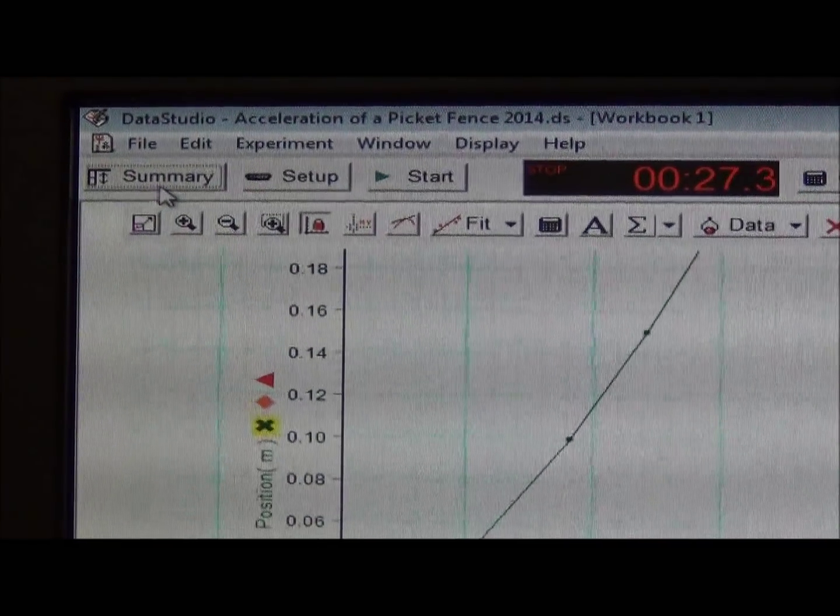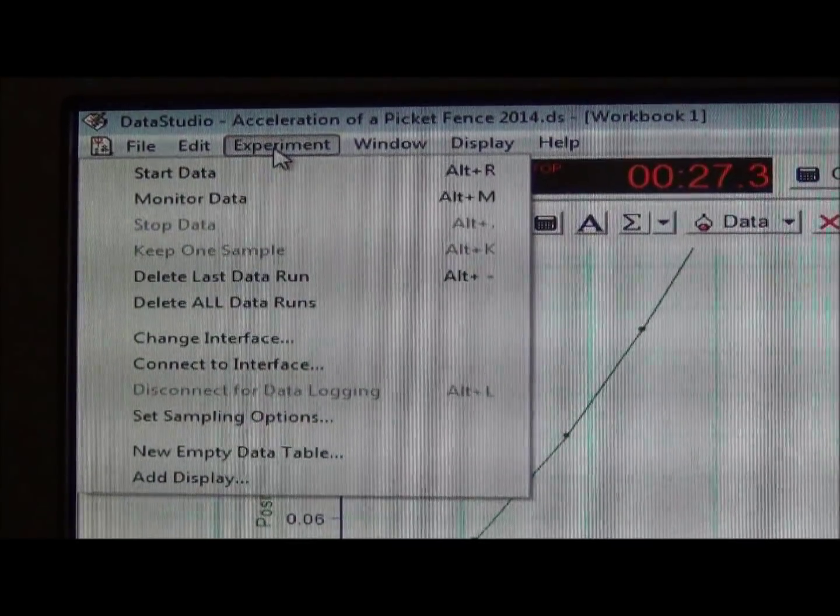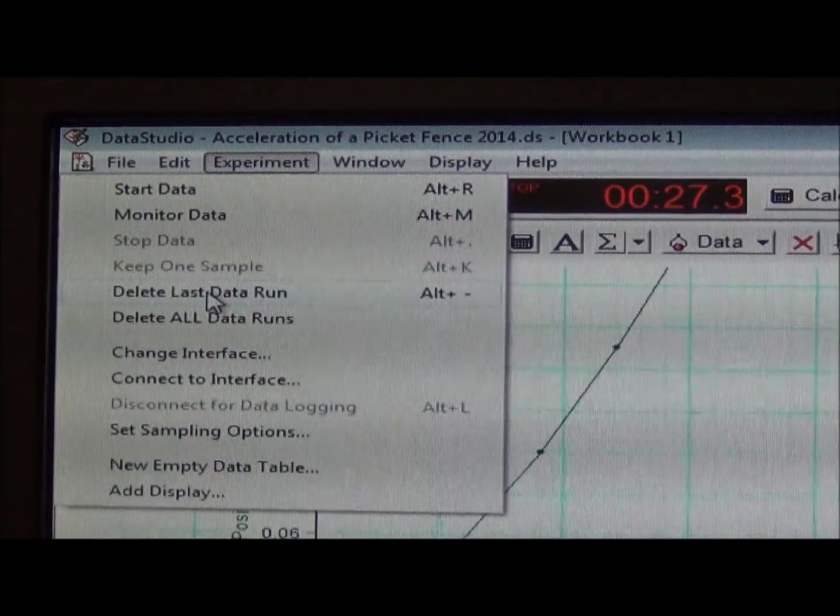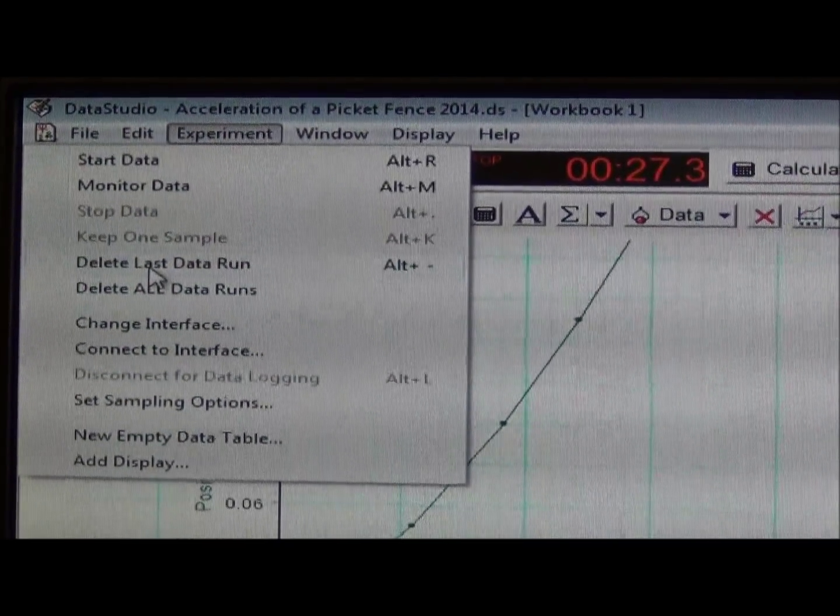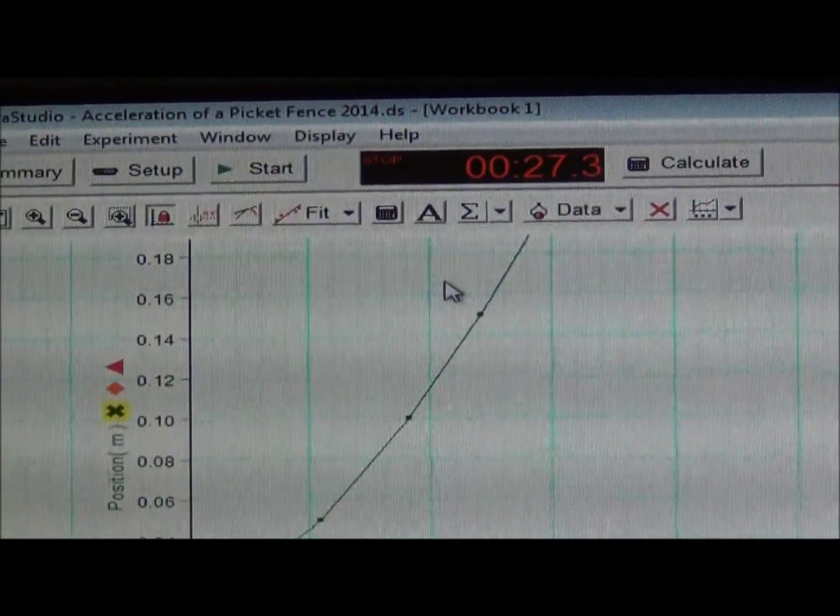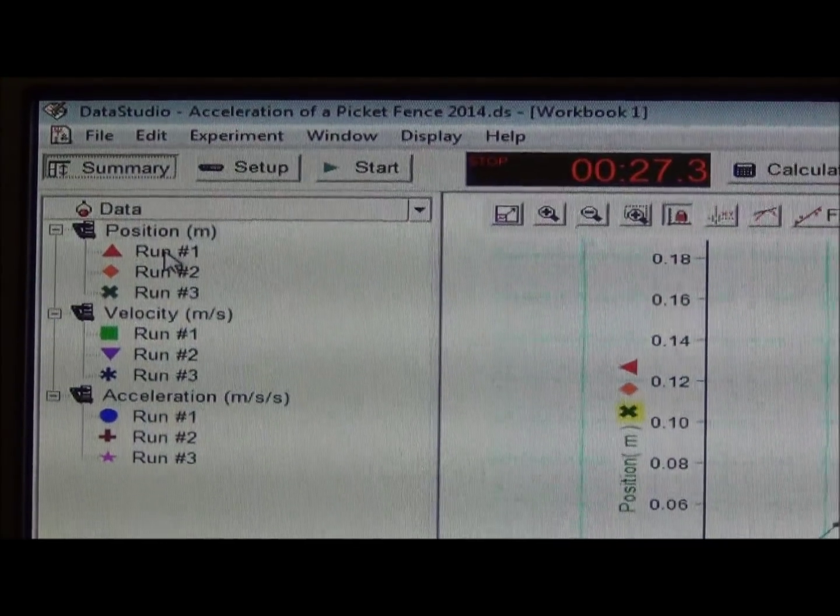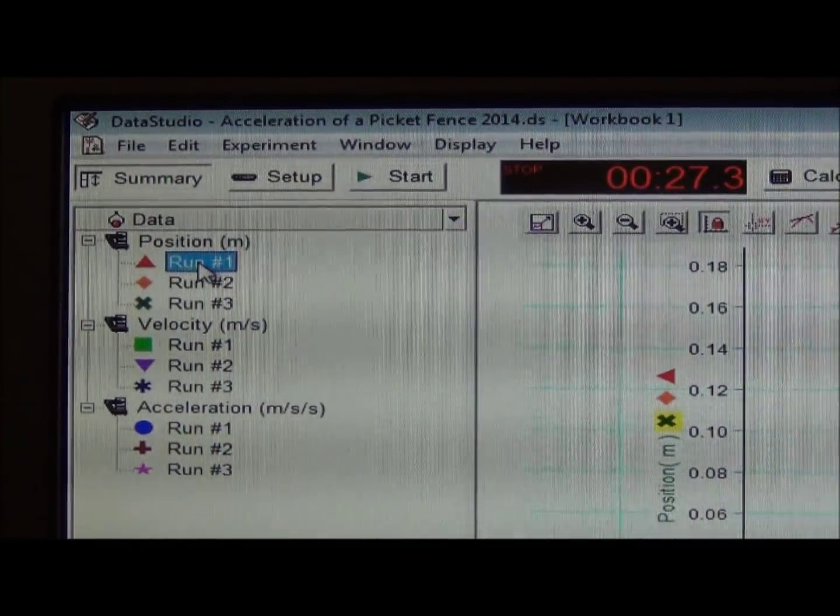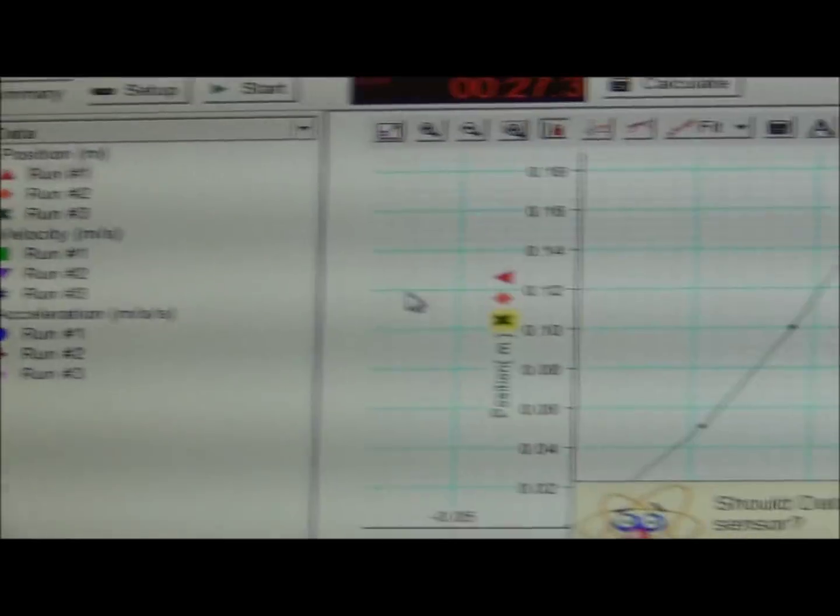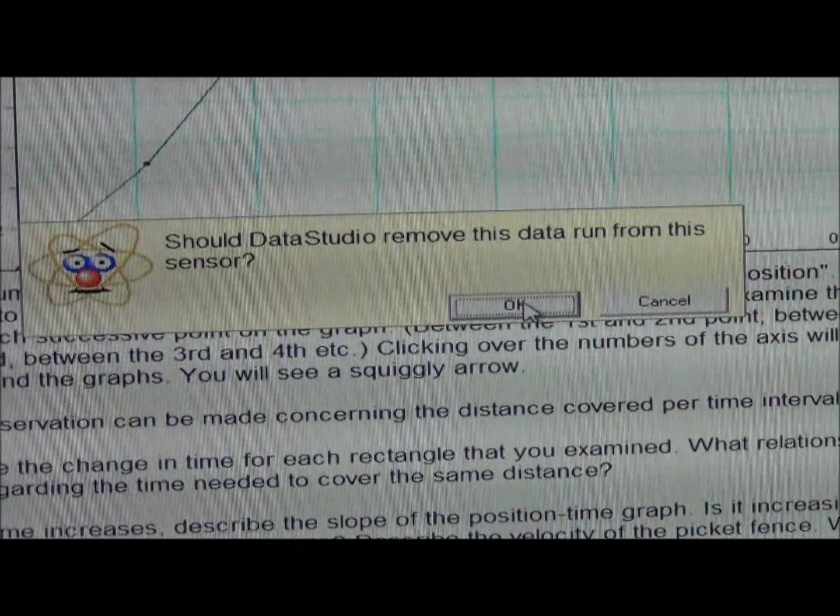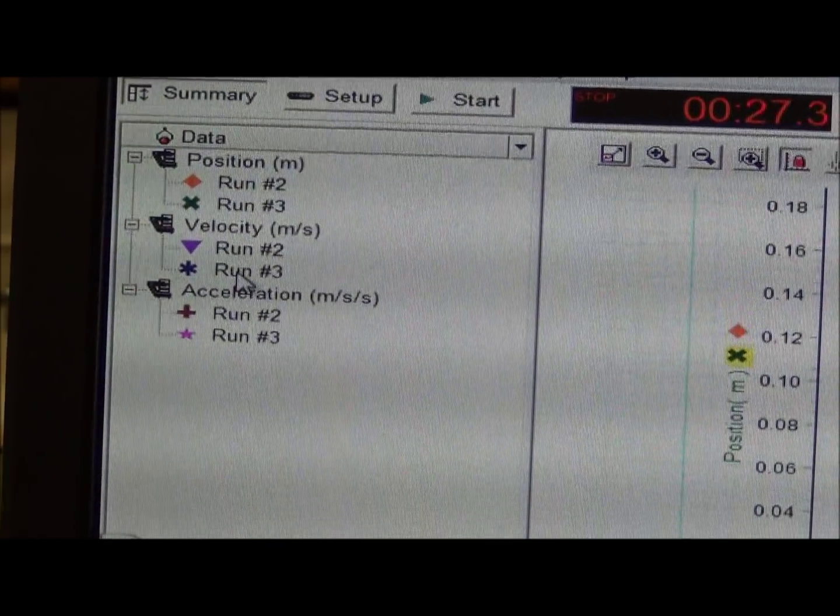There are two ways within Data Studio to remove data. You can either go up to Experiment, Delete Last Data Run. I generally do not use Delete All Data Runs. Or the other option is to go up to Summary, highlight whichever run you'd like to remove, press the Delete key. Data Studio will then ask you if you'd like to remove this data. Click OK. Run number 1 is now gone.